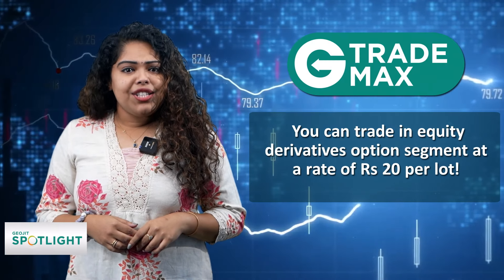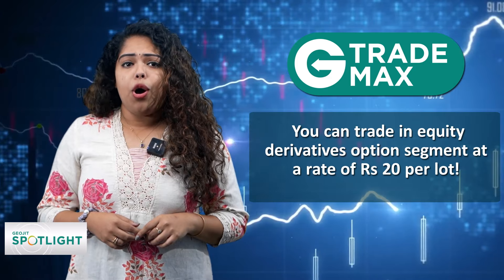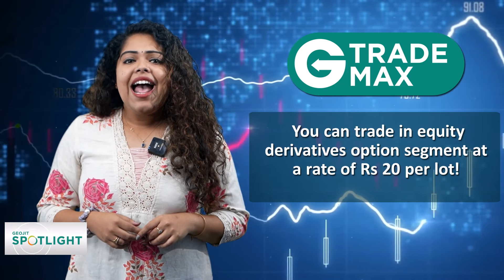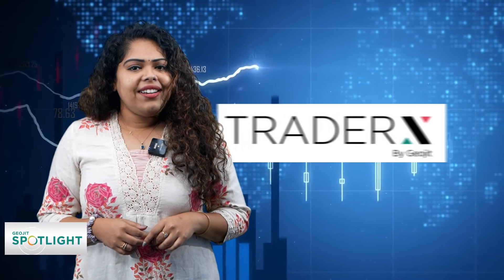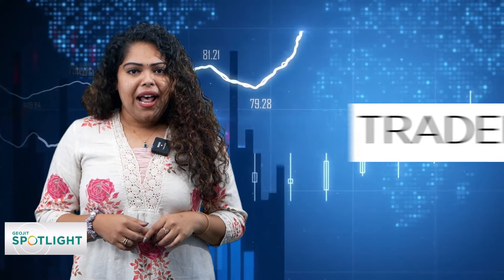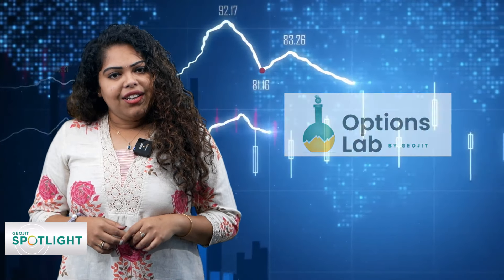In another plan, G-Trade Max, you can trade in equity derivatives option segment at a rate of 20 rupees per lot. In addition to this, customers will get an options trading platform called TradeRex, and an options back testing platform named Options Lab, for free.